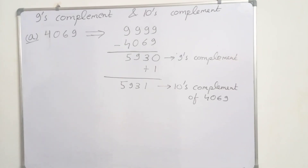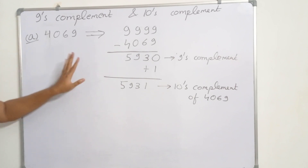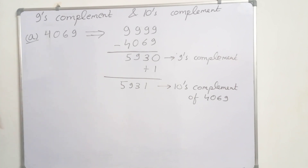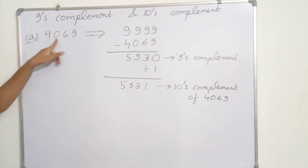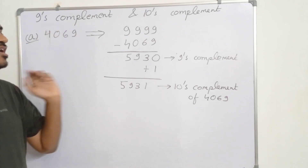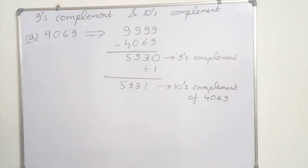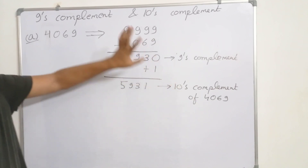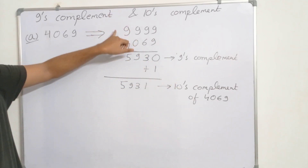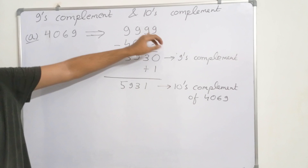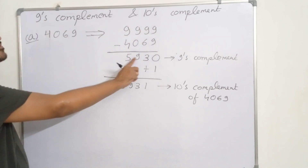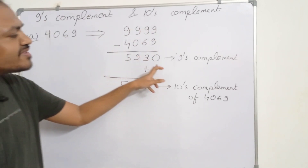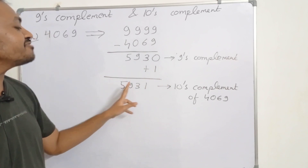Now we will try to find the 10's complement. Suppose we have to find the 10's complement of 4069. What we will do is first find the 9's complement and then add 1. That will give the 10's complement. Subtracting 9 from all digits, we get 5930. Then we simply add 1 and we get 5931.